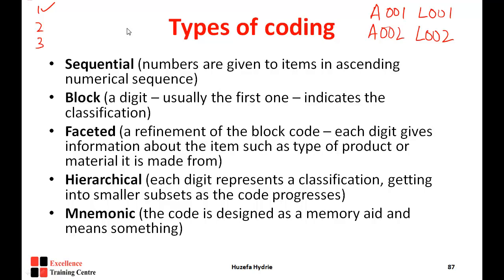For example, in class, your code might be 1, 2. If the first digit is 1, you are male; if 2, you are female. Then the second digit: if 1, you are a student of ACCA; if 2, a student of FIA; if 3, a student of CIMA. So each number in the code represents something — that is how faceted codes work.